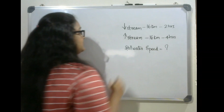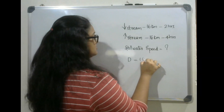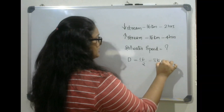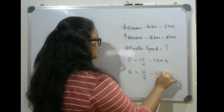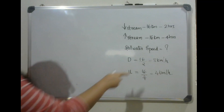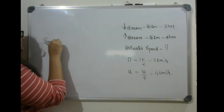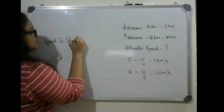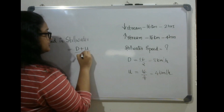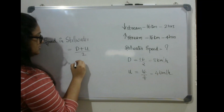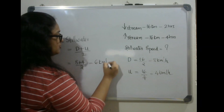We need to find the speed of still water. From the given information we know that downstream rate equals 8 kilometers per hour and upstream rate equals 4 kilometers per hour. As per the formula, speed in still water equals downstream rate plus upstream rate divided by 2. So that equals 8 plus 4 by 2, which equals 12 by 2, which is 6 kilometers per hour.